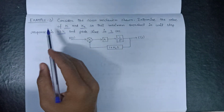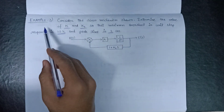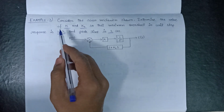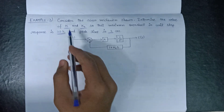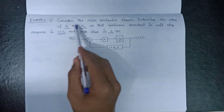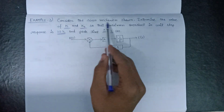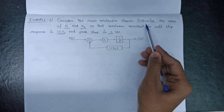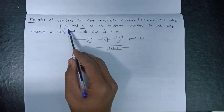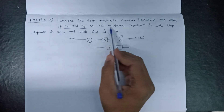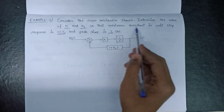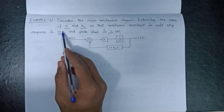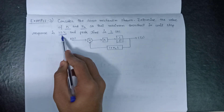Welcome all. In this lecture, we are going to solve one more example based on time response. Consider the servo mechanism as shown in the figure and determine the value of k and kh so that the maximum overshoot in the unit step response is equal to 25%.